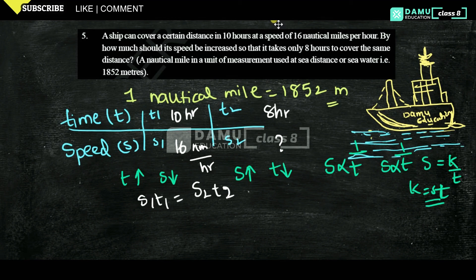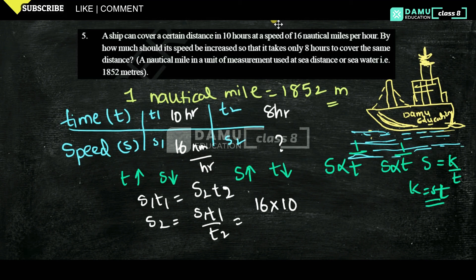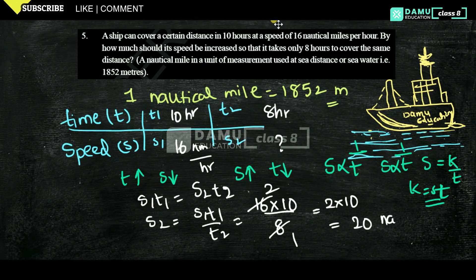What we have to find is S2. So S2 = S1 × T1 / T2. S1 is 16, T1 is 10, and T2 is 8. So S2 = 16 × 10 / 8, which gives 2 × 10 = 20 nautical miles per hour.